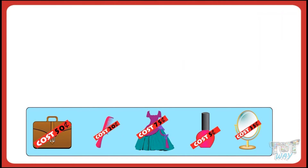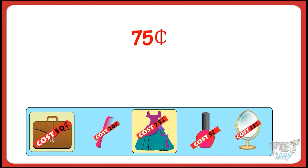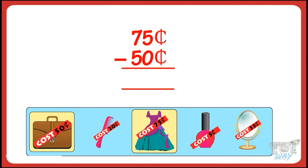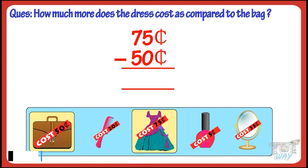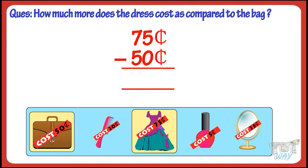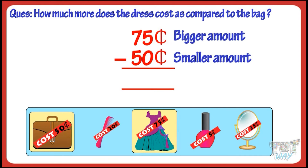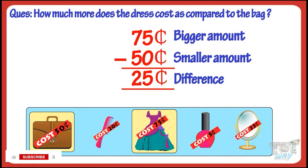Let's take one more example. Here are a few things with their prices mentioned. The cost of a dress is $0.75 and the cost of a handbag is $0.50. The cost of the dress is more than that of the handbag, but how much more? Can you calculate? Let me help you do that. You have to find the difference between the cost of the dress and the handbag. Subtract the smaller amount from the larger amount to get the difference. $0.75 minus $0.50, you get $0.25. So the dress costs $0.25 more than the handbag.